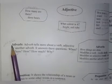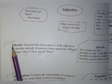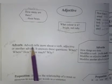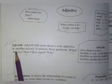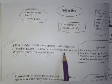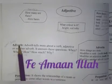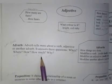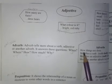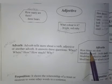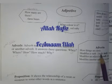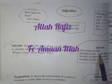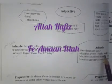Now the fifth part of speech is adverb — adverb ko Urdu mein kehte hain 'mutaliq fail'. Adverb tells more about a verb, adjective, or another adverb. It answers three questions: when, where, and how much or how things are done. For example, modifies a verb: 'just walk lazily' — walk is the verb, and lazily (susti se) is the adverb. It tells us how someone is walking — very lazily.